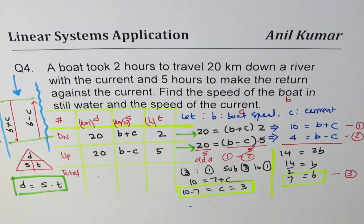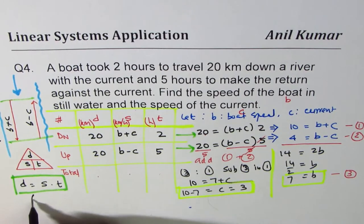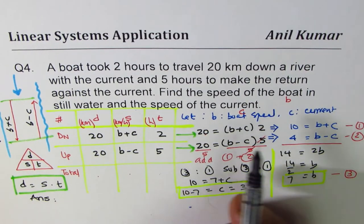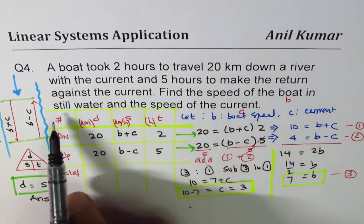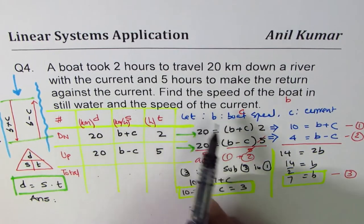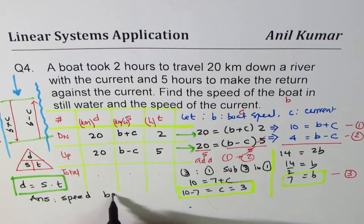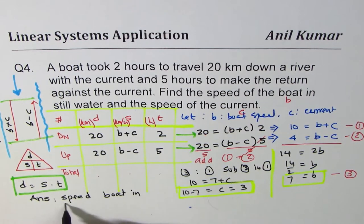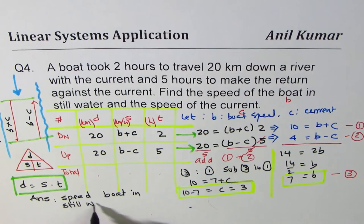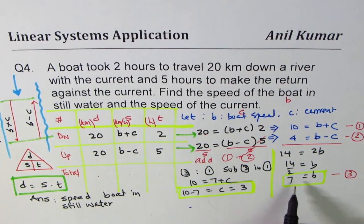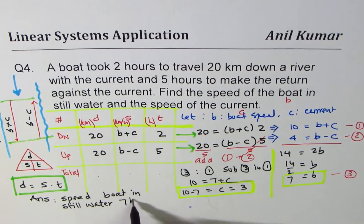In any word problem, you have to write answer very clearly, including units. That is most important. So let's write down the answer. Find the speed of the boat in still water and speed of current. Speed of the boat in still water, include units, 7 kilometers per hour.